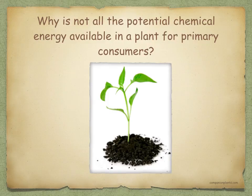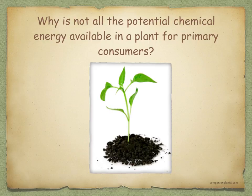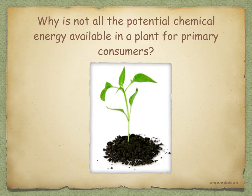Not all the potential chemical energy is available in a plant for the primary consumer. The chemical potential energy is stored in plant tissues in various organic molecules, especially carbohydrates, lipids, and proteins, and it's from these that primary consumers obtain their energy. However, nearly half of this chemical potential energy is used by the plants themselves — they release the energy by respiration, using it for purposes such as active transport. During these processes, much energy is lost to the environment as heat, and what is left is then available to the organisms which feed on the plants.